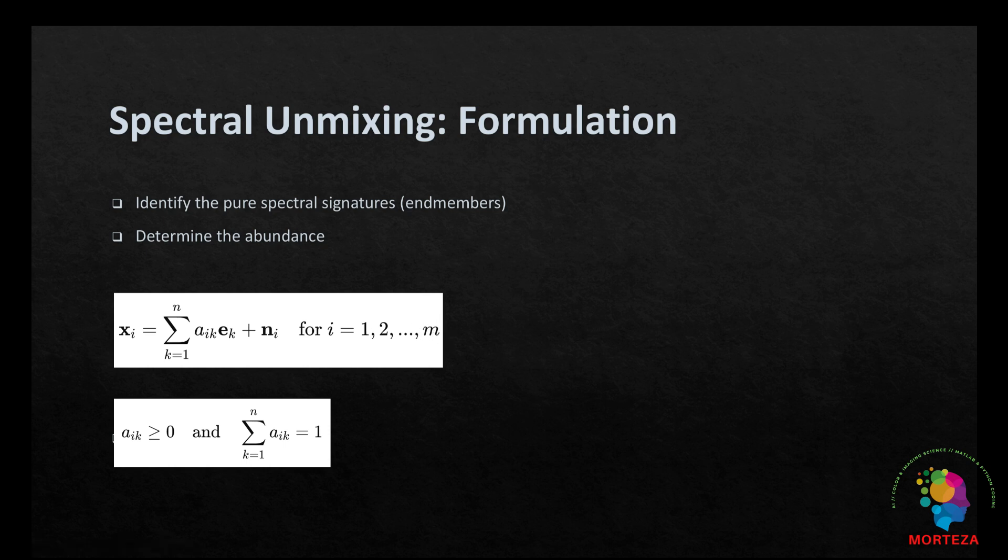The key assumption in this model is that the observed spectrum of each pixel is a linear combination of endmembers and that the abundances are non-negative and sum to one. These are physical constraints. Mathematically this can be expressed as shown here.